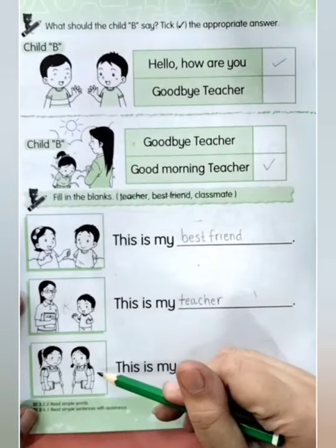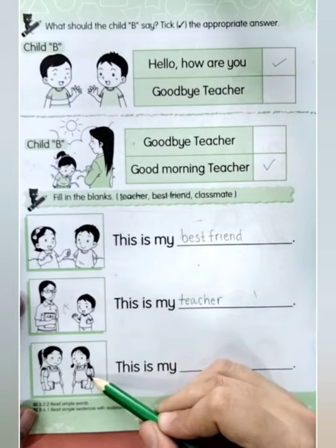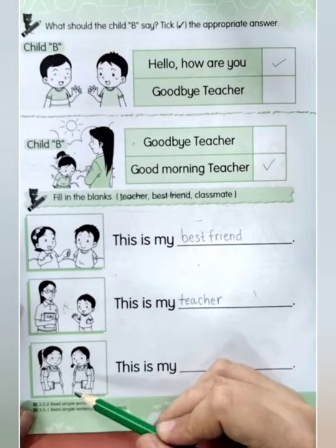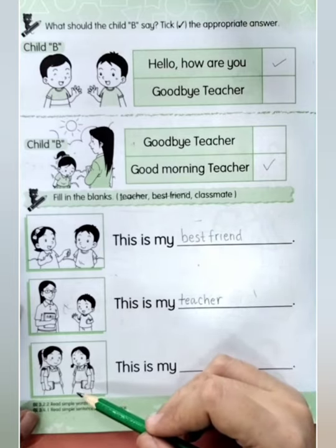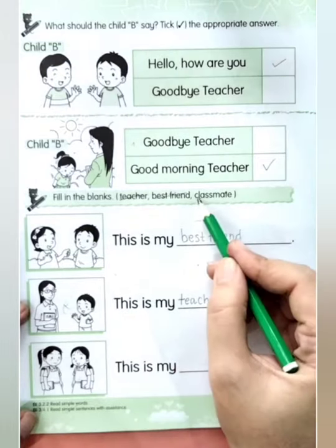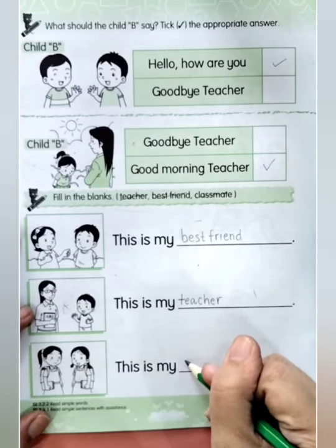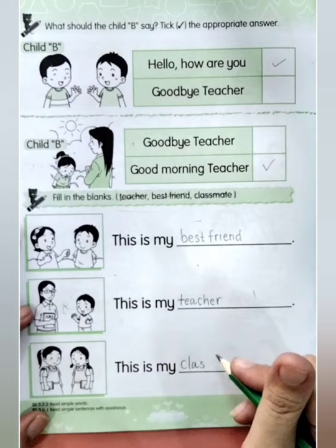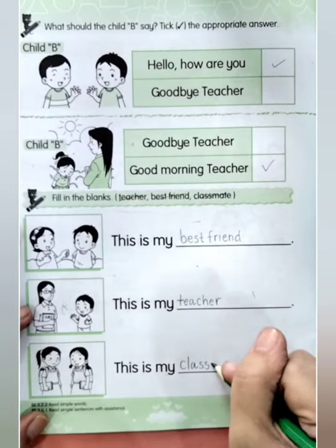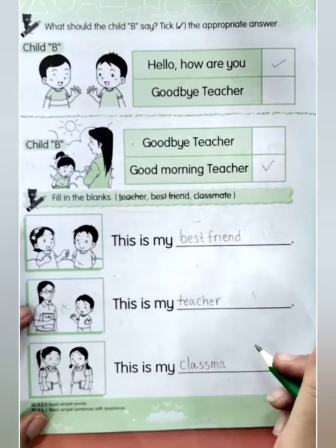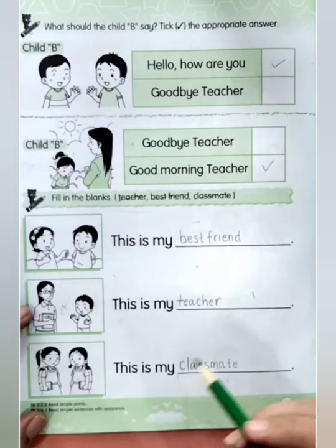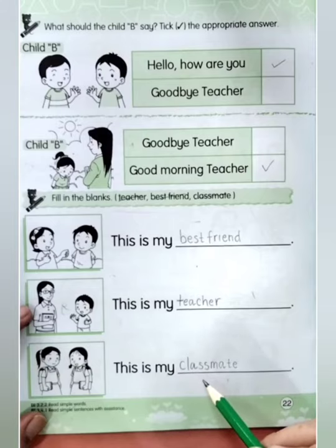Now look at the last picture: 'This is my...' Look at the children — they are wearing uniforms, so they are in school. The answer is classmate. Write 'classmate' there. Let's spell together: C-L-A-S-S-M-A-T-E, classmate. Say it together: this is my classmate. Good job!